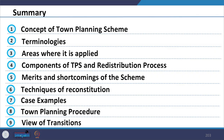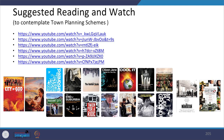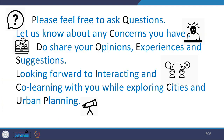Summarizing what was covered today: the concept of Town Planning Scheme, various terminologies, areas of application, components and redistribution process, merits and shortcomings, techniques of reconstitution, case examples, Town Planning Procedure, and ground-level transitions. The coverage was introductory to make students aware of the topic; enormous readings and resources are available to explore further. Please feel free to ask questions, share opinions, experiences and suggestions. Looking forward to interacting and co-learning while exploring cities and urban planning. Thank you.